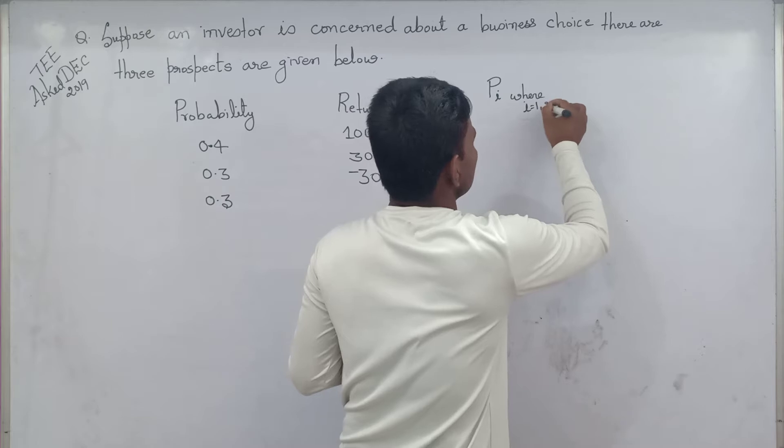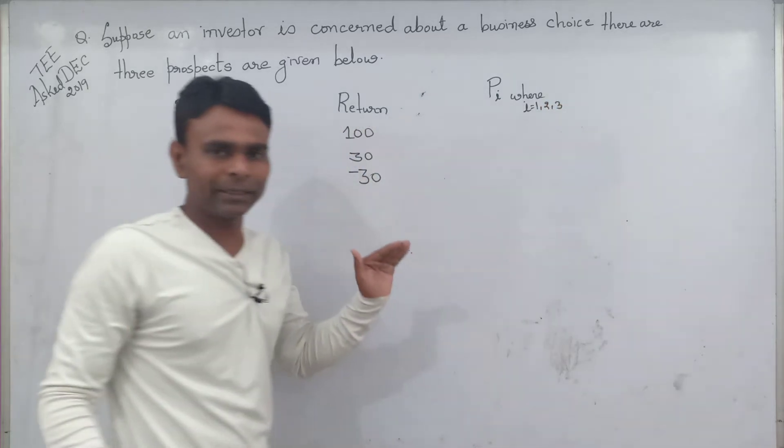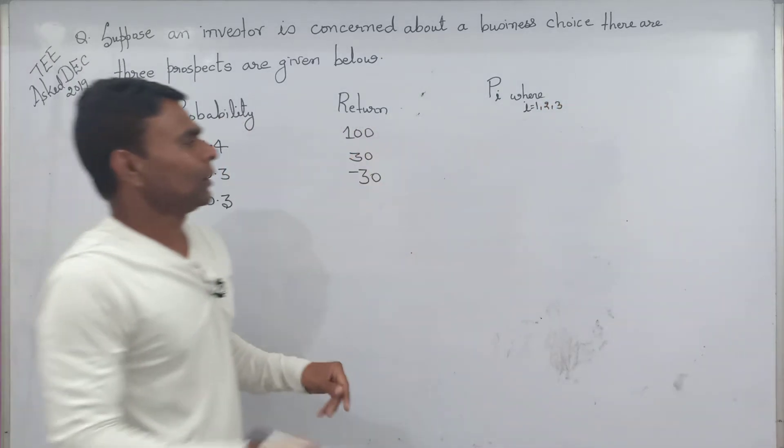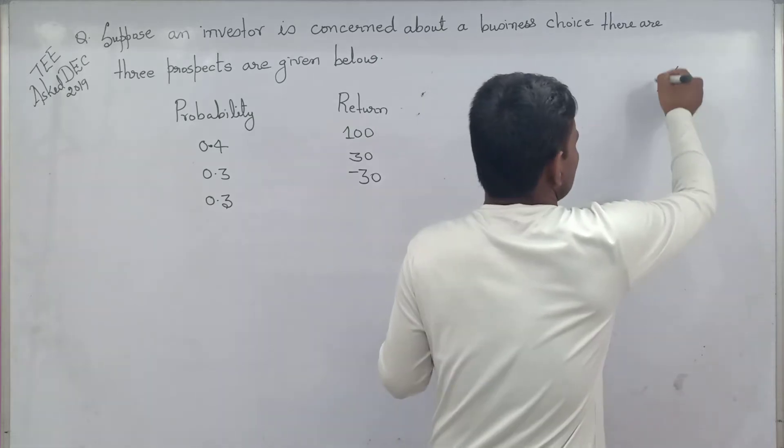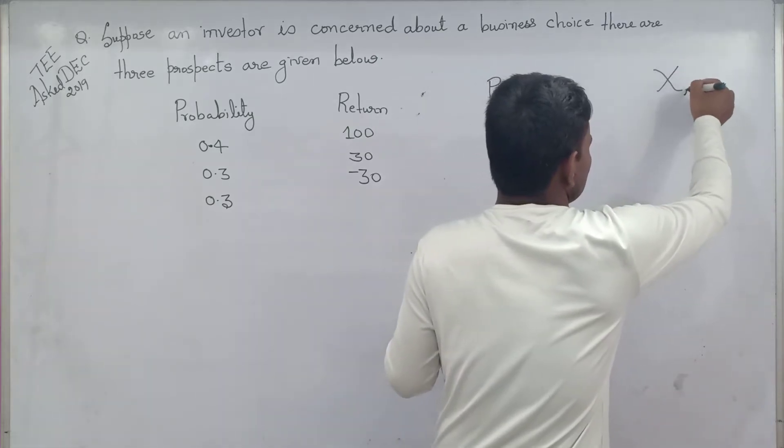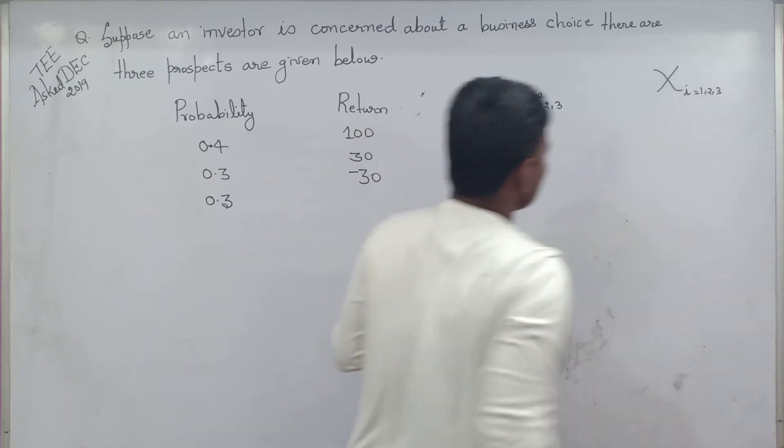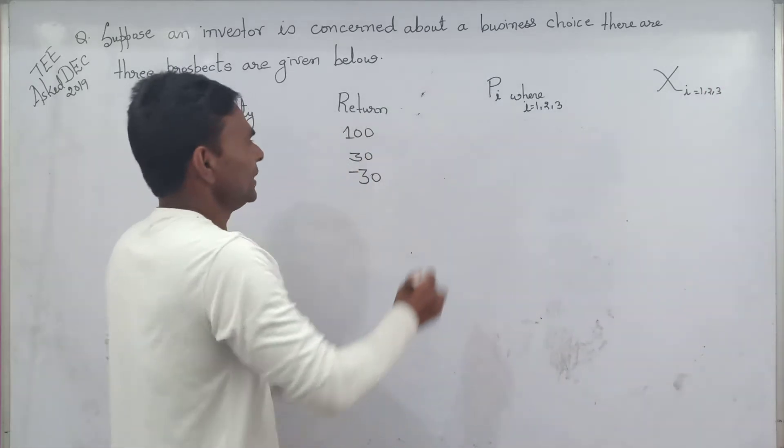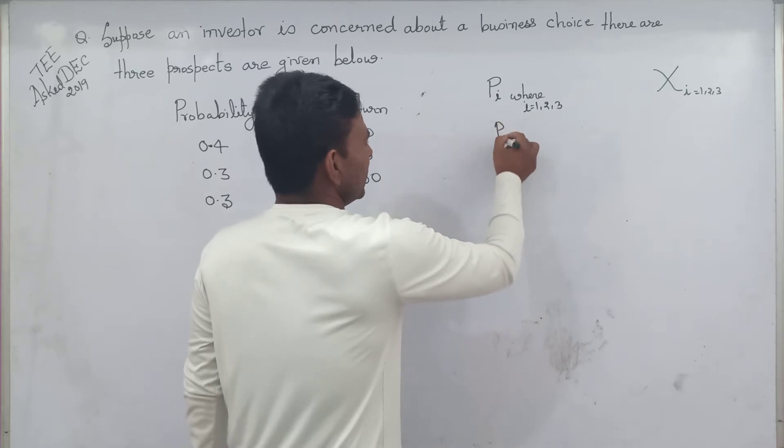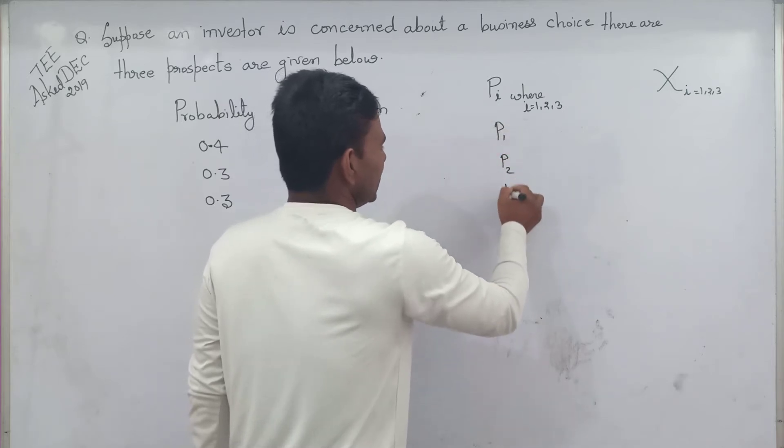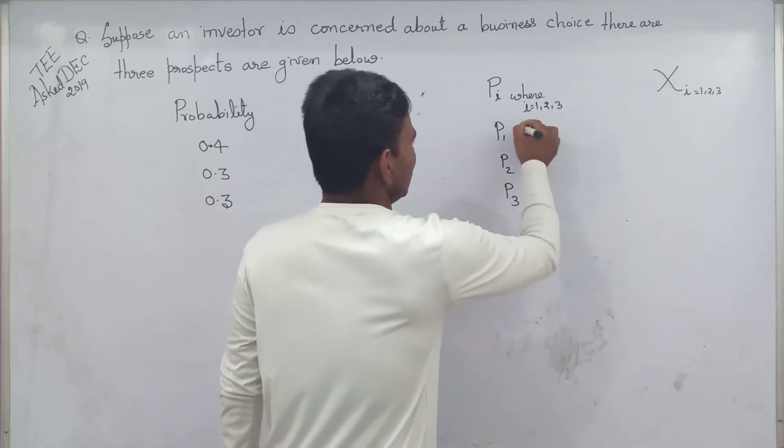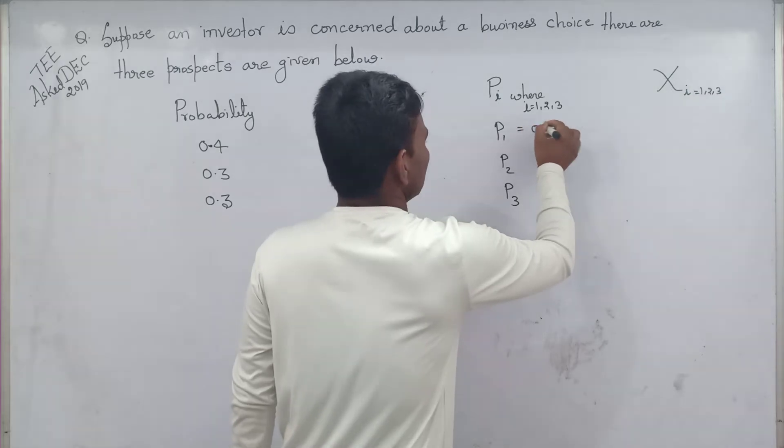And x return is denoted xi where i equal to 1, 2, 3. Three prospects: p1 equal to 0.4, p2 equal to 0.3, p3 equal to 0.3.